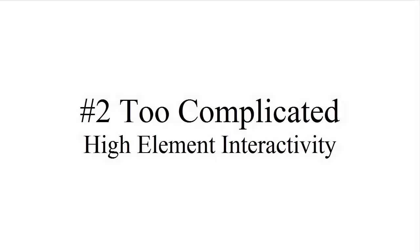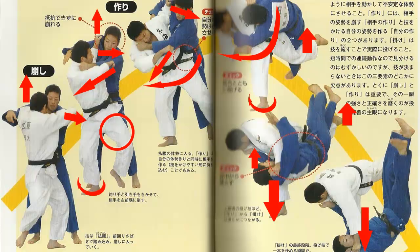Now let's talk about the second major reason why people fail to visualize things. That's when what you're teaching is too complicated, or it has high element interactivity. In the simplest terms, that's when there are too many things going on at the same time — like this picture here. For example, executing a judo throw involves so many tiny moves that have to be executed simultaneously and coordinated successively within a second or so. In this case, it really does help to break it down into individual moves and illustrate them visually using pictures, video, and arrows and shapes.